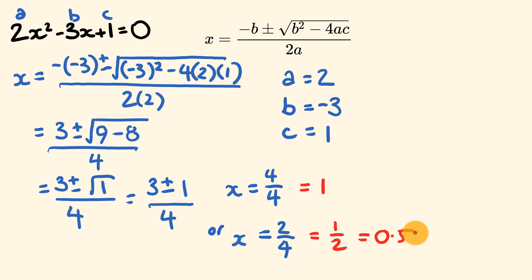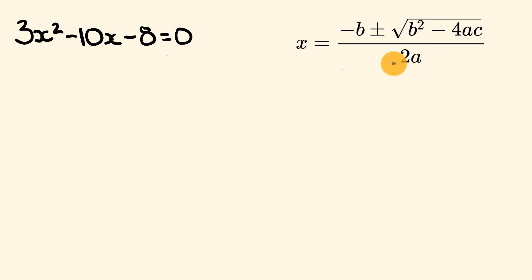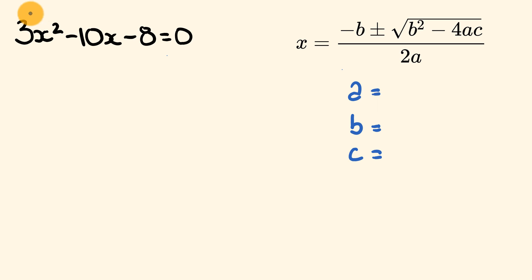What about we do a couple of other examples? For our next example, we have 3x squared minus 10x minus 8 is equal to 0, and we're going to be using the quadratic formula once again to solve this. I recommend you pause the video and give this a go, then come back and see how you went. The first thing we do is work out the values for a, b, and c. Be very careful when you do this because you don't want to get the wrong values.